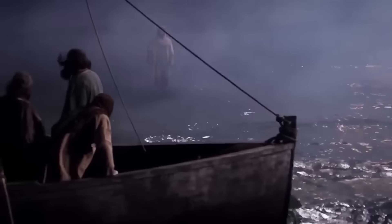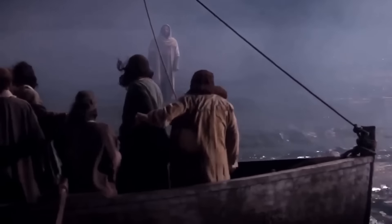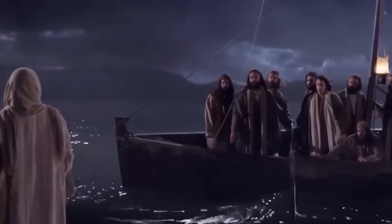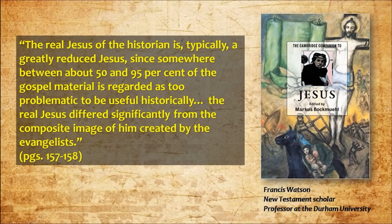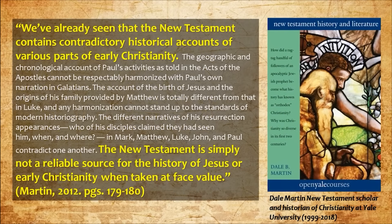This makes our attempt to find a real historical portrait of Jesus impossible. In the Cambridge Companion to Jesus, chapter 10, Francis Watson writes: 'The real Jesus of the historian is typically a greatly reduced Jesus, since somewhat between about 50 and 90% of the Gospel material is regarded as too problematic to be useful historically.' Yale scholar Dale Martin concludes: 'We've already seen that the New Testament contains contradictory historical accounts of various parts of early Christianity. The New Testament is simply not a reliable source for the history of Jesus or early Christianity when taken at face value.'